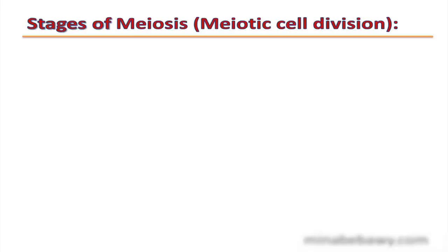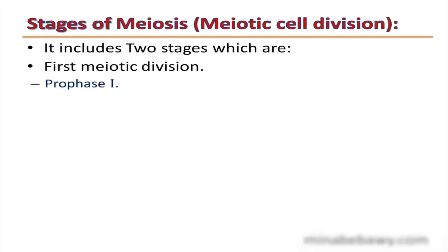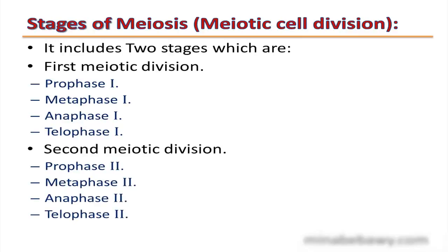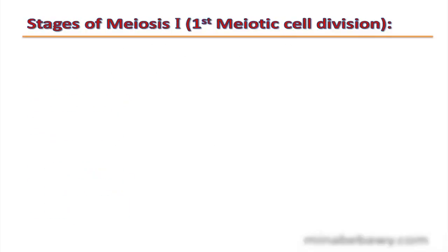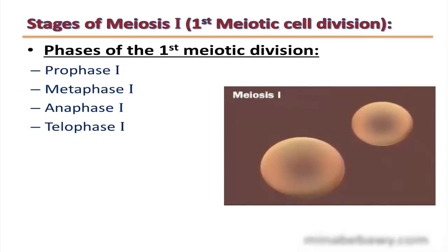Meiosis includes two stages. The first meiotic division contains four phases: prophase 1, metaphase 1, anaphase 1, and telophase 1. The second meiotic division also contains four phases: prophase 2, metaphase 2, anaphase 2, and telophase 2.